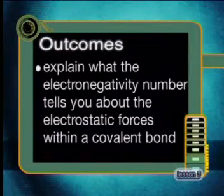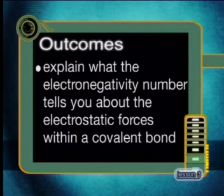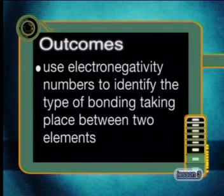By the end of this lesson you should be able to explain what the electronegativity number tells you about the electrostatic forces within a covalent bond, and use electronegativity numbers to identify the type of bonding taking place between two elements.